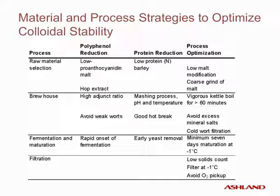It is very important to make your beer correctly and use the stabilizer only to fine-tune the colloidal stability; stabilizers should not be used solely as a corrective remedy. Select your malt carefully — low-polyphenol content malt is available, though a balance must be made between taste and polyphenol content as some of these malts are less aromatic. Hop extract contains fewer polyphenols than hop leaves. Use a higher adjunct ratio with more corn or rice, and avoid weak worts, as excessive sparging can extract a lot of polyphenols. During fermentation and maturation, add yeast immediately so fermentation starts quickly, minimizing oxygen pickup. Choose low-protein barley malt, as it produces less protein in the wort. Your mashing regime is very important for efficient conversion, and early yeast removal is important because leaving yeast in the beer will cause autolysis and contribute to excessive protein.